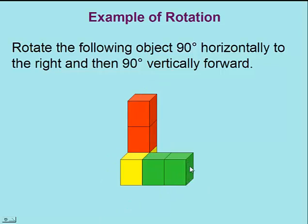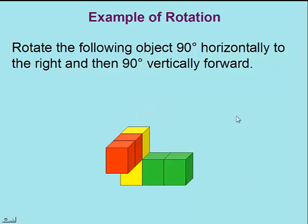Next, we'll do a 90-degree vertical rotation towards you. So that will mean the top of the object will now be pointing towards you. You need to be specific in your instructions when you're doing rotations of three-dimensional objects.